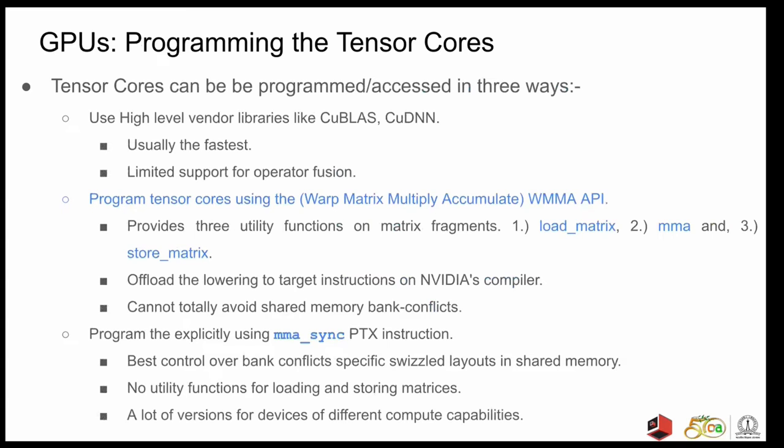There are different ways of programming or accessing the tensor cores. The first and the most easiest way to access or harness the tensor cores is to use a vendor provided library like cuBLAS or cuDNN. They are usually the fastest but they have limited support for operator fusion. The second way is to use the WMMA or the Warp Matrix Multiply Accumulate API. This API provides utility functions for loading, computing and storing small matrix fragments. The advantage is that the lowering of these utility functions to the actual machine instructions is offloaded to NVIDIA's compiler and the programmer does not have to worry about it. Because of the ease of programming that this method has to offer, we use it in our work. These functions are exposed as LLVM intrinsics in the NVPTX backend, which are accessed in MLIR using Ops in the GPU and the NVVM dialect, which were introduced by us.